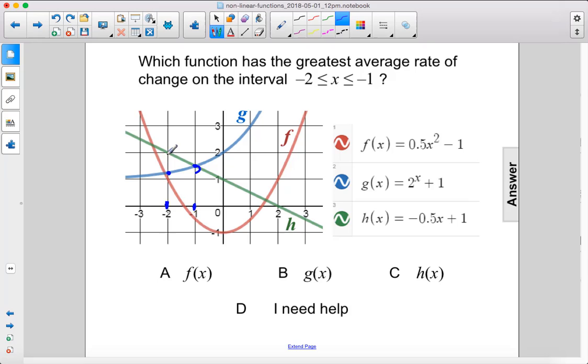The green graph decreases from here to there, and the red graph decreases from here to there. So blue has the greatest average rate of change, so that is B.